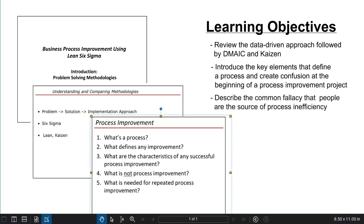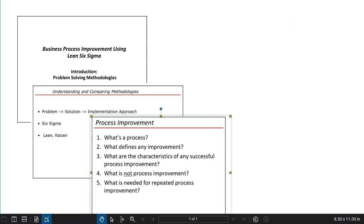We'll also introduce the fallacy behind pointing at people performance as the root cause way to improve process performance.